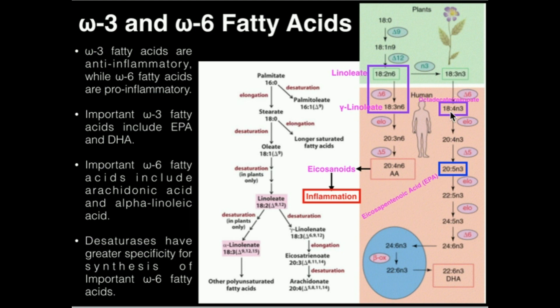Alpha-linolenic acid, if we get it through the diet, can be processed through a long metabolic pathway — you see 18:4 N3 and so on. The one I've boxed in blue is EPA, eicosapentaenoic acid, one of the two major anti-inflammatory omega-3 fatty acids. We can synthesize it if we have the precursor, but that precursor — alpha-linolenic acid — is essential; we have to get it through the diet. Following the pathway further, we go into a peroxisome and then out, and we have DHA. So we can synthesize DHA, but only by starting from this essential omega-3 alpha-linolenic acid.